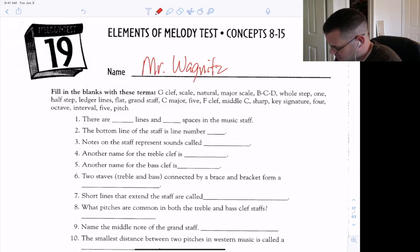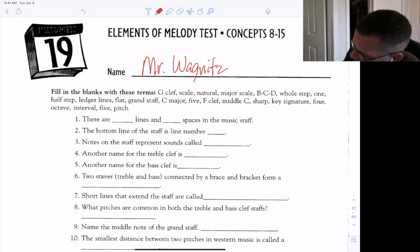So we're gonna fill in the blanks with all those terms up there. There are five lines and four spaces in the music staff. The bottom line of the staff is line number one.